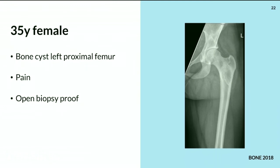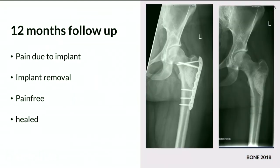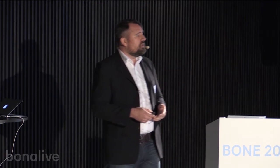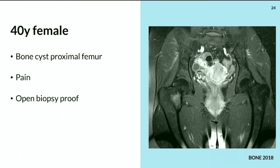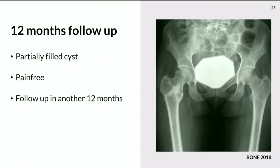Another case — a tumor case: a painful bone cyst of the proximal femur was filled. After one year, the patient had pain from the plate, which was then removed, and everything had integrated. Even in tumor cases, this works as a good bone filler. A similar cyst in the proximal femur was also treated — though I did not reach the entire cyst — and she is currently pain-free, though I'm concerned there may be recurrence.